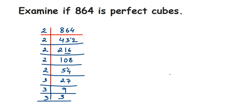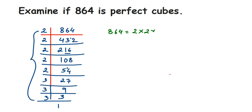And 3 is a prime number, so 3×1=3. Now we're going to rewrite all the prime factors we got. So 864 equals 2×2×2×2×2×2 — in total we have six 2s — and then three 3s: 3×3×3.